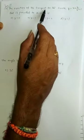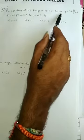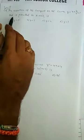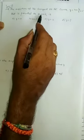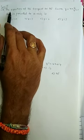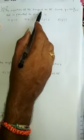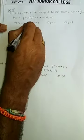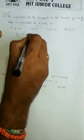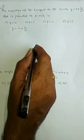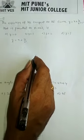The question asks: find the equation of the tangent to the curve y = x + 4/x², which is parallel to the x-axis. To find the equation of the tangent, the required slope is nothing but the derivative of the given curve.